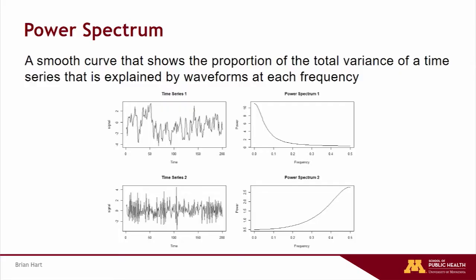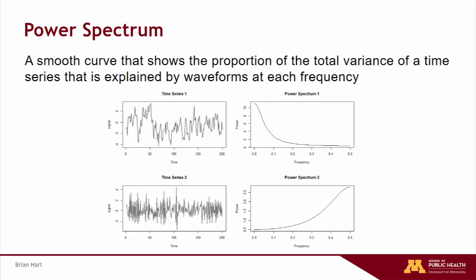We have this EEG data recorded, and what we're doing is we're estimating what's known as the power spectrum. The technical definition is here — it's a smooth curve that shows a proportion of the total variance of a time series, or EEG recording, that can be explained by waveforms at each frequency. I have two examples of what you might get out of an EEG recording here, and then the power spectra from those recordings. The top one you can see is a slower moving wave dominated by low frequency, so the peak in the spectral density on the right is off in the left low frequency area. Likewise, the bottom EEG recording has lots of rapid back and forth movement — that's high frequency signal — and its associated power spectra has a peak up on the far right side. These power spectra are telling us something about the underlying brain activity going on in each subject, and this is our goal metric to analyze from each of these subjects.